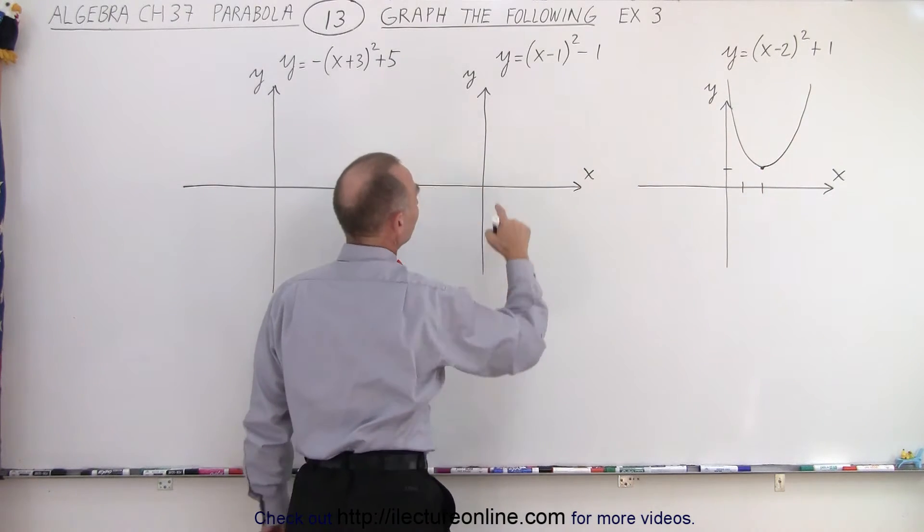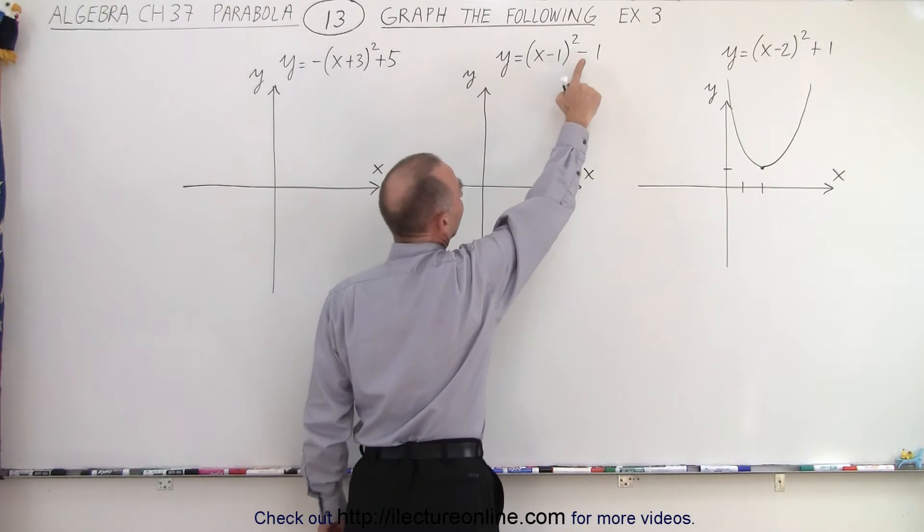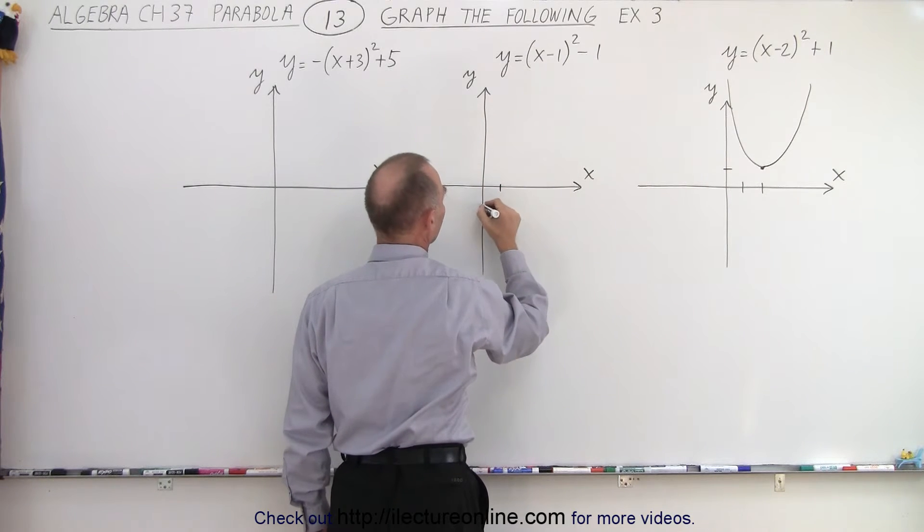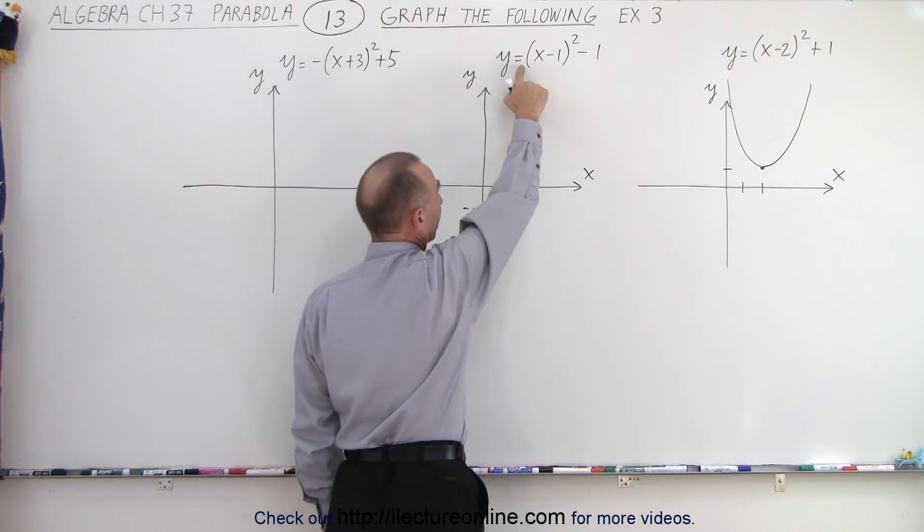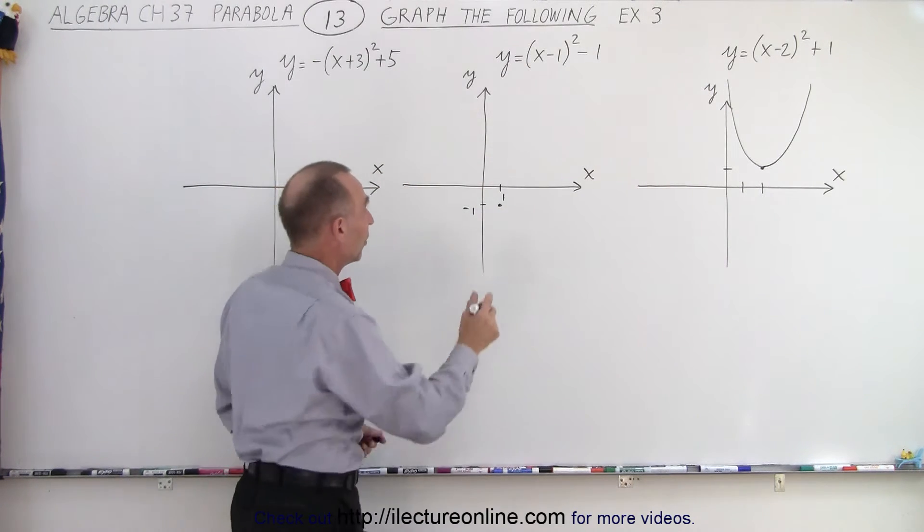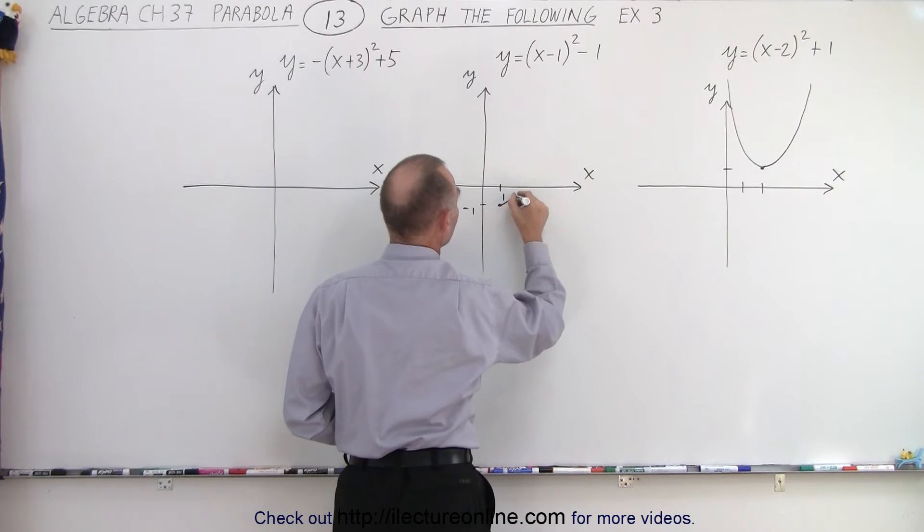Over here we have a shift to the right by one and down by one. So to the right by one, down by one, one, negative one. So this is where the vertex will be and the parabola will open upward because there's a positive in front. That means the parabola will look like this.